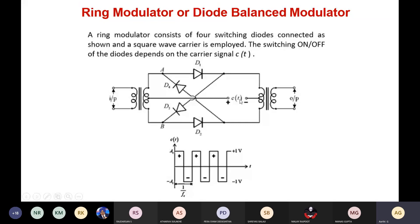During the positive half of the carrier, diodes D1 and D2 are forward biased. During the negative half, D3 and D4 are forward biased while D1 and D2 are reverse biased. Based on this switching, the carrier signal c(t) is multiplied with the message signal to produce the output signal.